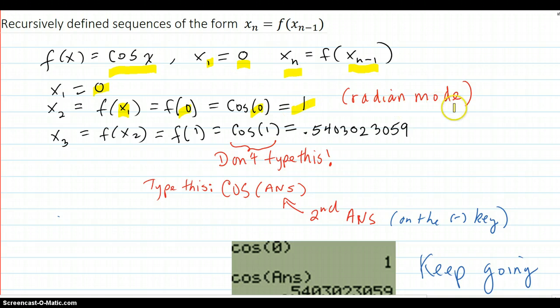Then you get x_3, which equals f of the previous x_2, according to the formula. That was 1 from here, and cosine of 1 equals 0.5403023059. We're going to keep continuing with this process.